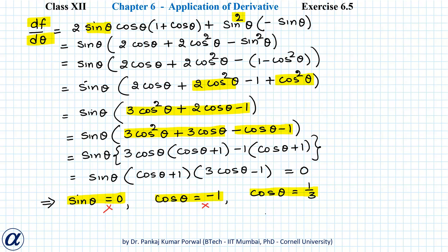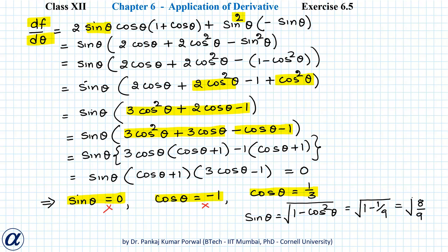When cosθ = 1/3, we can find sinθ = √(1 − cos²θ) = √(1 − 1/9) = √(8/9) = 2√2/3. Now to check whether we have a maximum or minimum at cosθ = 1/3, we need to find the second derivative of f with respect to theta.